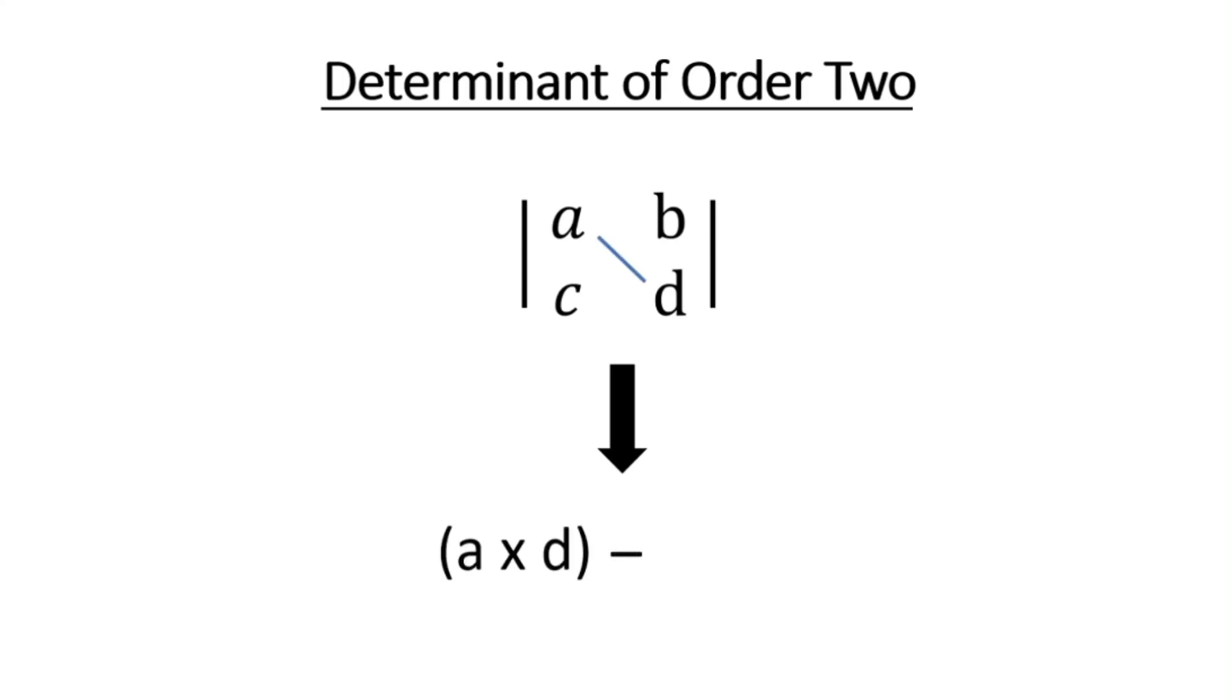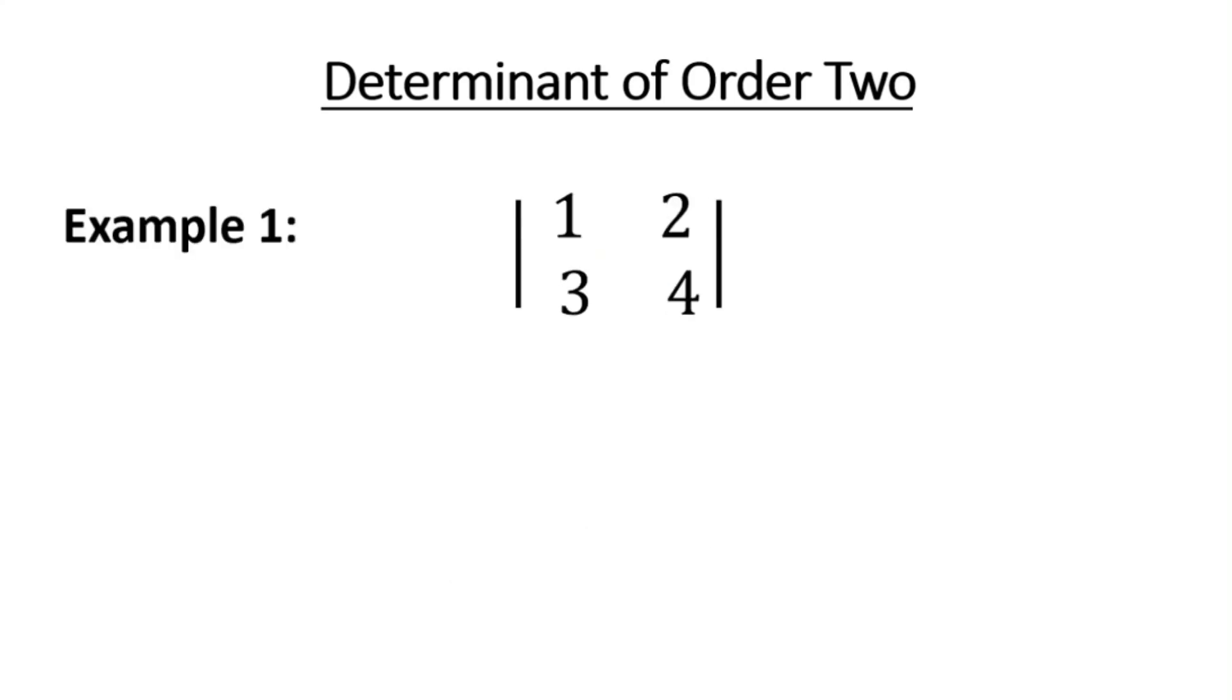product of diagonal elements from right to left, that is b into c. This is how we solve determinant of order 2. Now let's try to understand with the help of an example. First we will take product of diagonal